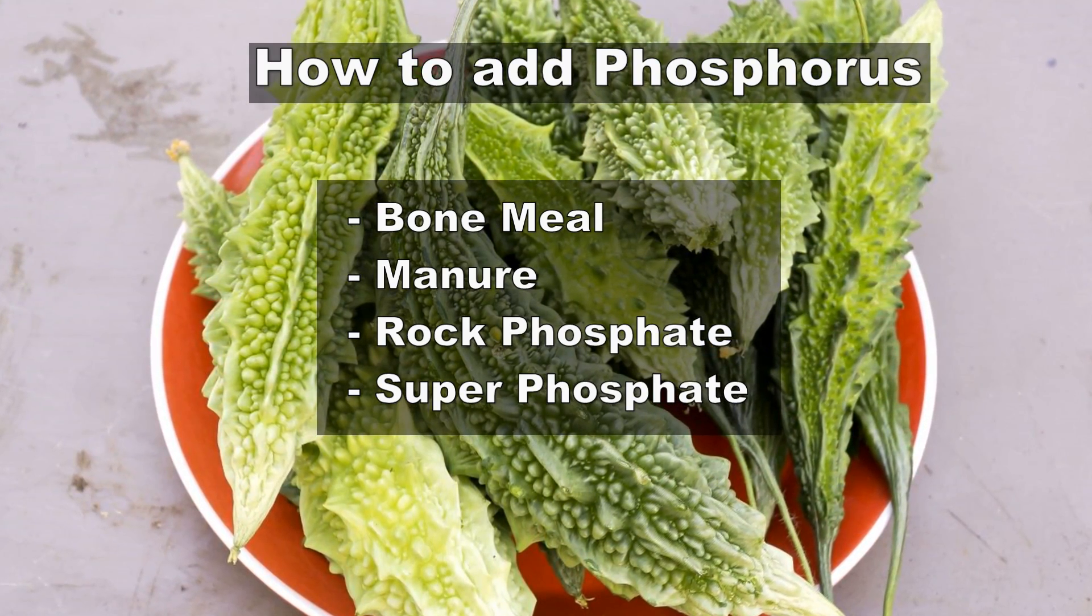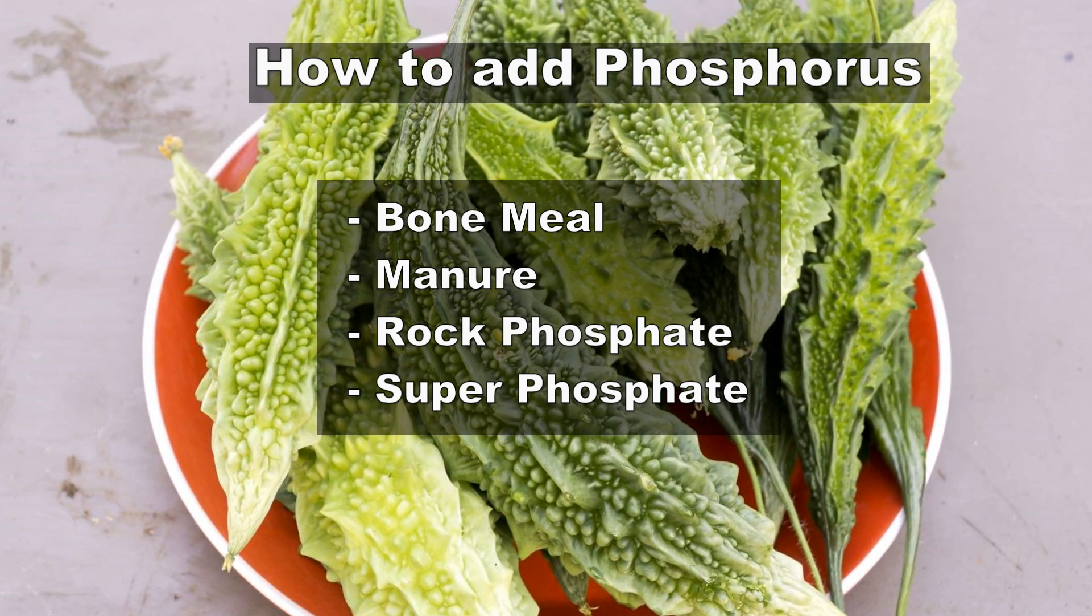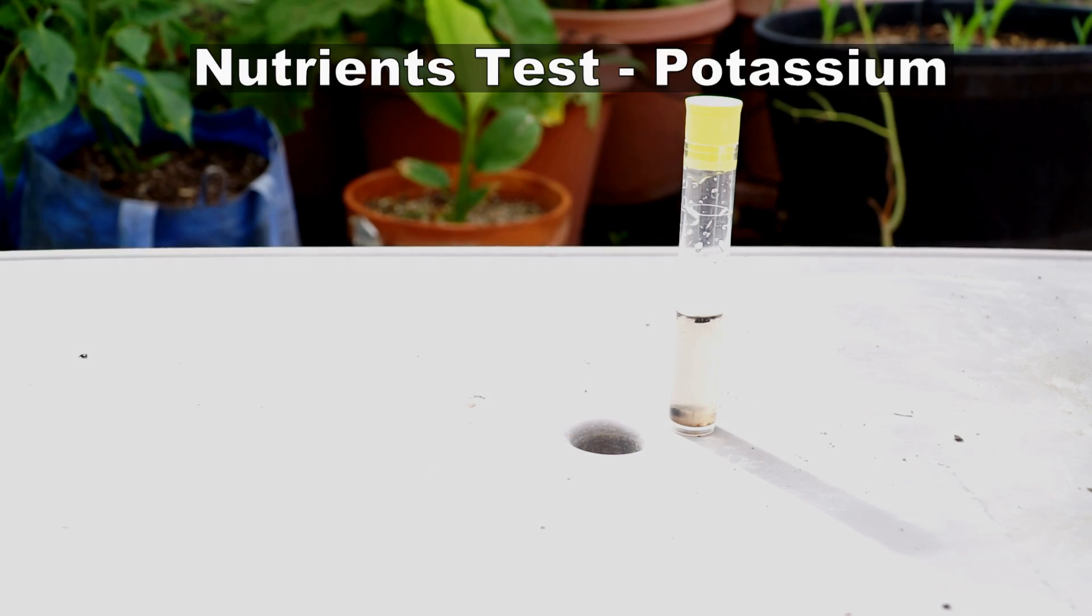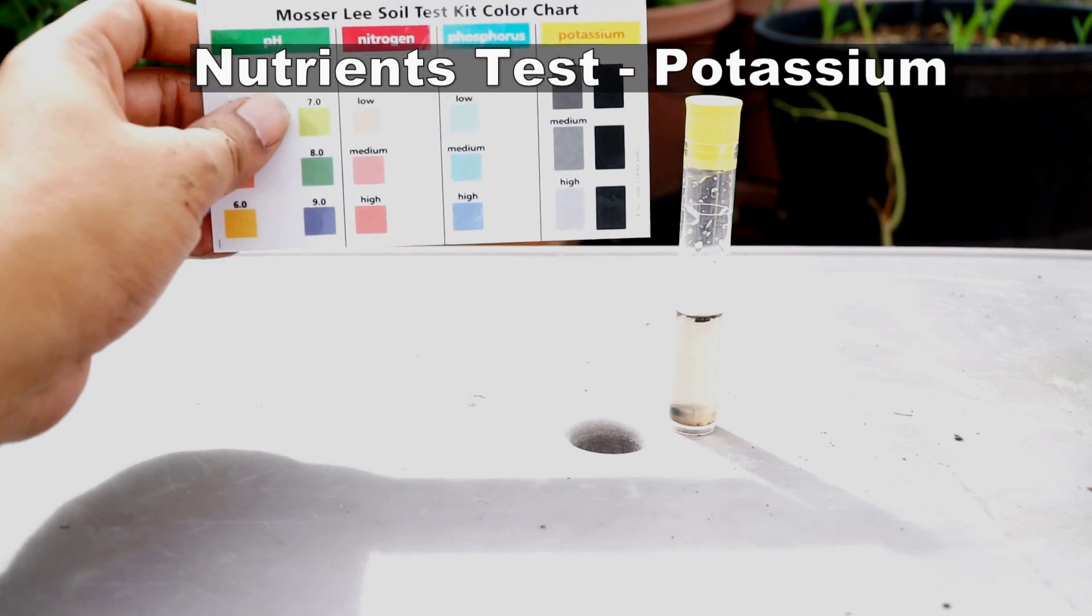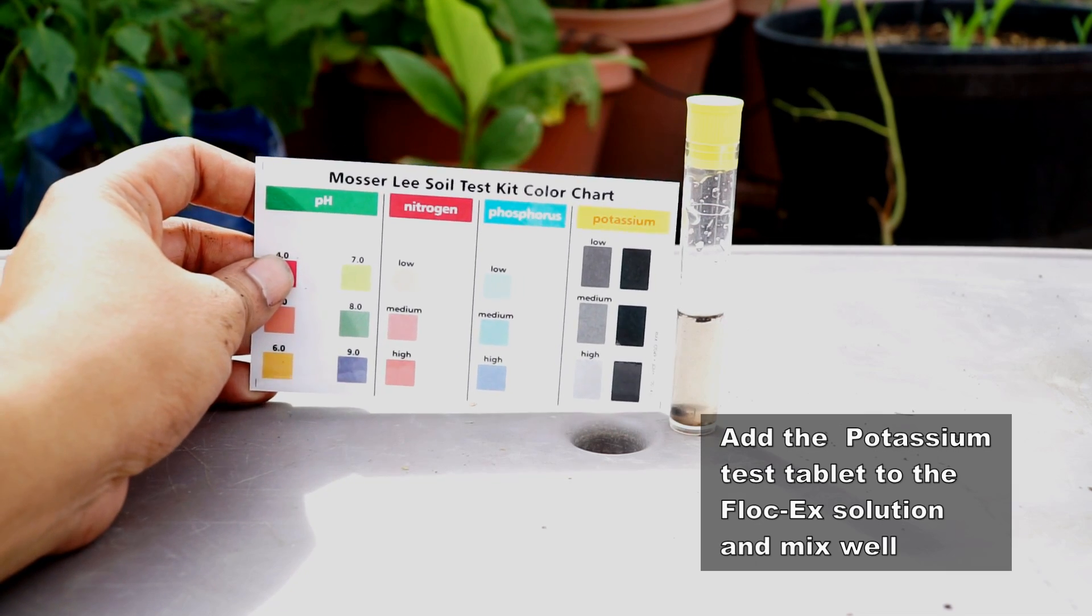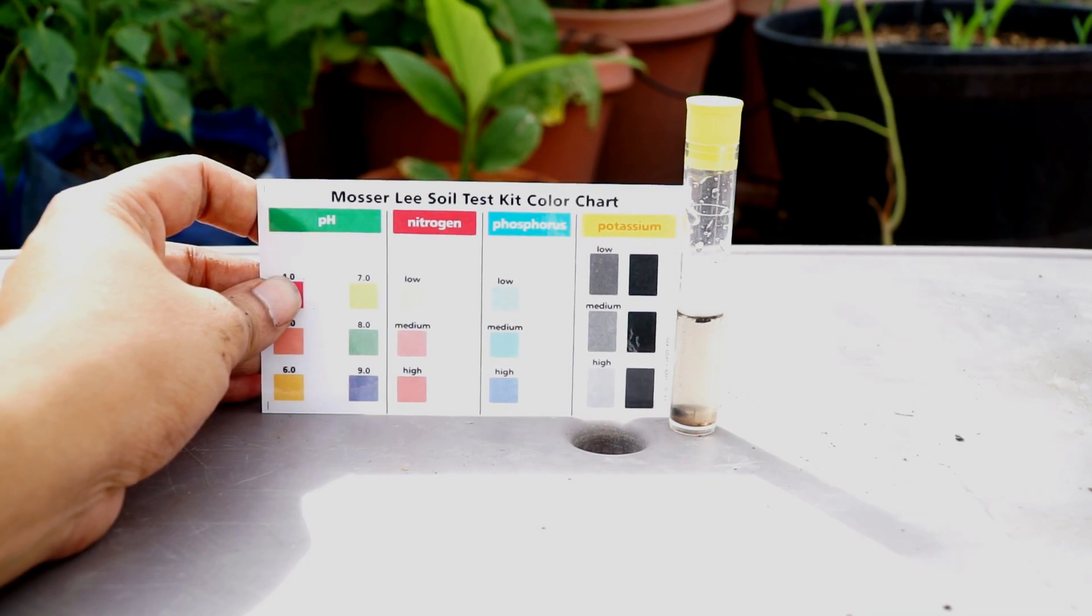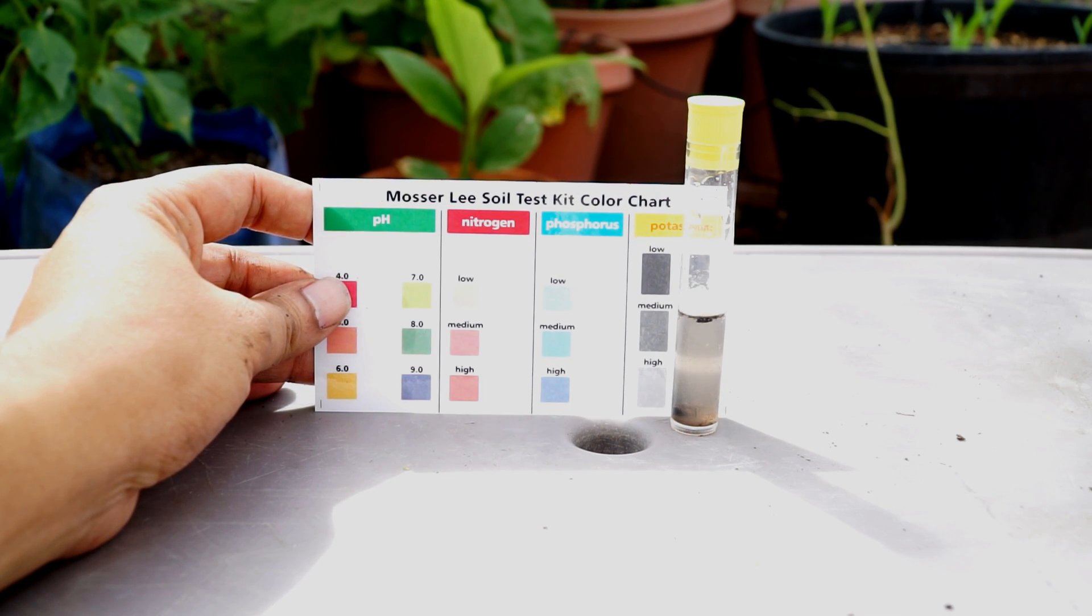The final nutrient that plants need is potassium. In this test you can see that the level of potassium in our soil matches high, which means that we have adequate potassium levels.